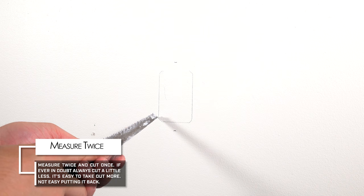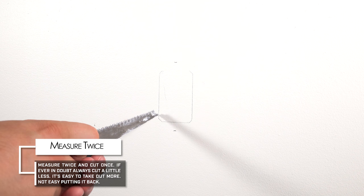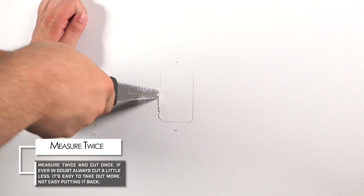Grab your drywall saw and start cutting. Be sure to cut on the outside of your lines to accommodate for the thickness of the plastic.